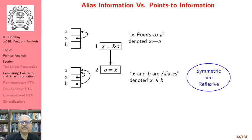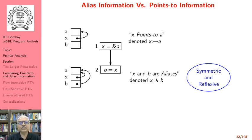It is easy to see that the alias relation is symmetric and reflexive. The alias relation says two pointer expressions are aliased if they hold the same address. It is reflexive because x holds the same address as itself. It is symmetric because if x is aliased to b, then b must be aliased to x since b holds the same address as x.